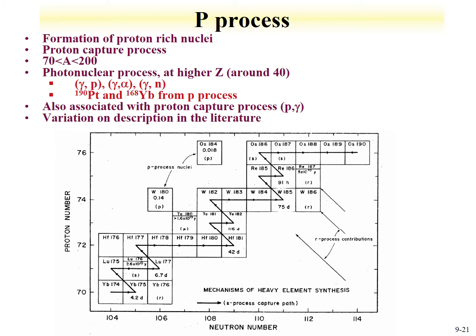The formation of proton-rich or neutron-deficient nuclei occurs through the P process — proton capture — or photonuclear processes at high Z of around 40. These photonuclear processes can result in emission of protons, alphas, or neutrons. For example, platinum and terbium are products of the P process. Various descriptions of the P process exist in the literature, indicating that its exploration is still ongoing, but the fundamental aspect is that these processes are responsible for forming light stable isotopes.